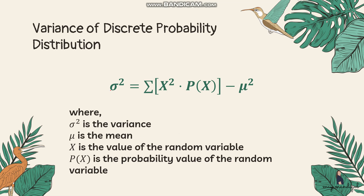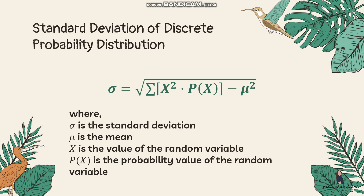For the variance, the symbol is sigma squared, and the formula is: sigma squared equals the summation of x squared times p(x), minus mu squared. First square the random variable values, multiply by the probability, get the summation, then subtract the square of the mean. To get the standard deviation, simply take the square root of the variance.